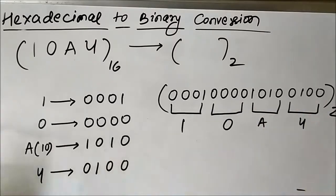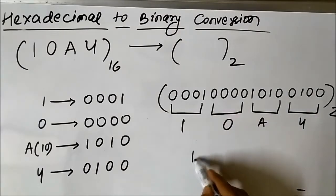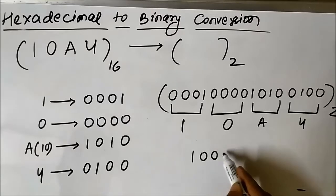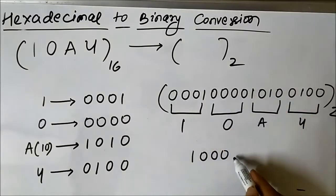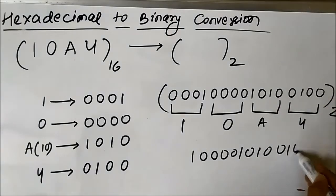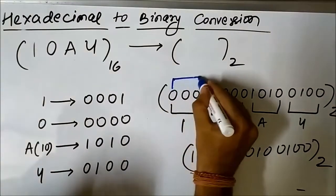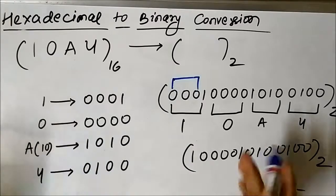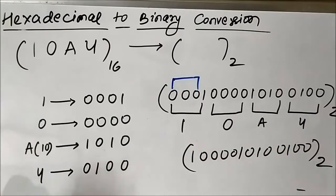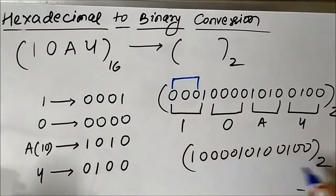This is how we converted the hexadecimal number into binary. Another important thing is that you can also write this as 1000101000100, because the leading zeros at the front cause no change and have no effect on the value of the binary number. So you can remove them and write it in that simplified form.